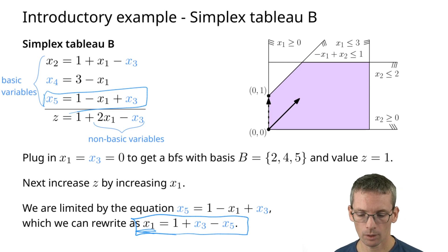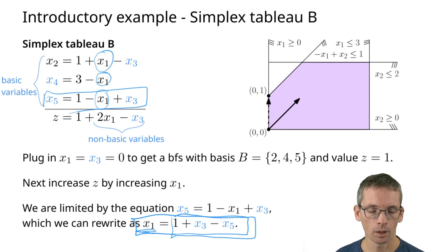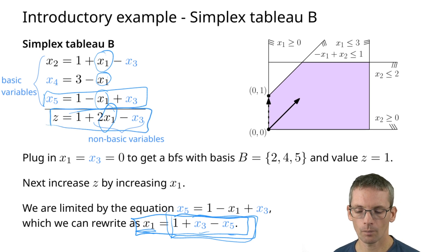Then I also have to take a look at where in my simplex tableau does x1 show up. It shows up quite often. In each of those, I will have to replace it by whatever I have here, so that I again have my basic variables as linear functions in x3 and x5. Likewise here the x1 I will replace by this here to get my objective function also in x3 and x5.